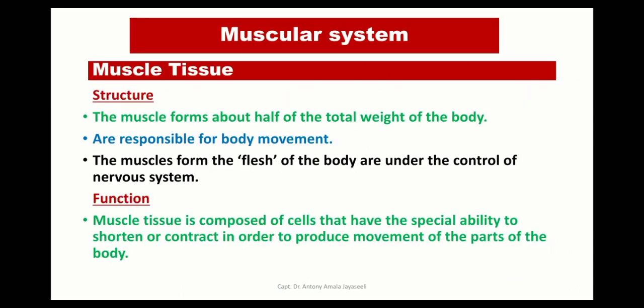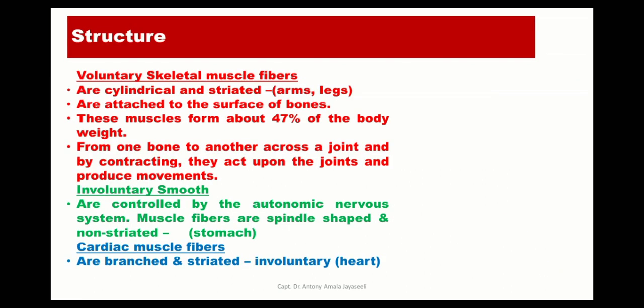Moving on to the muscular system, these muscle-related tissues are formed of special cells which have the ability to shorten and contract in order to produce movements of various parts of the body. They are voluntary skeletal muscles, involuntary smooth muscles, and cardiac muscles found in the heart.